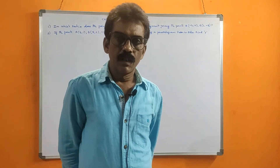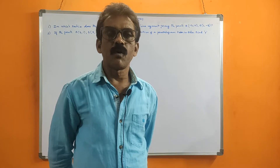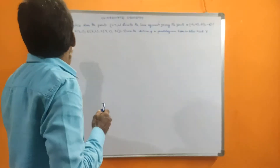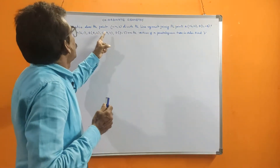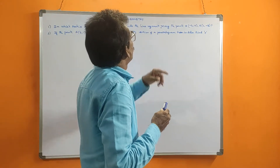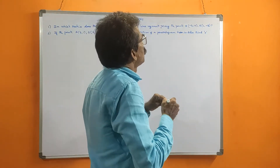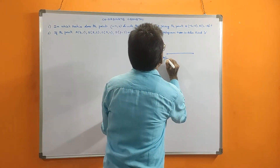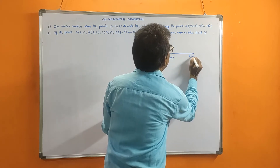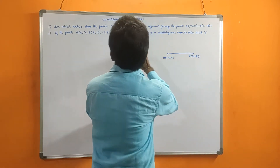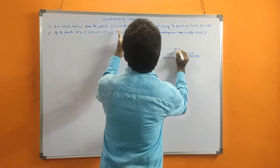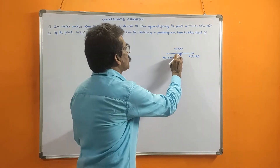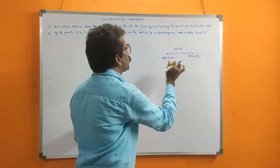Hello everyone, welcome to my channel. In this video I want to explain some more numerical problems on coordinate geometry. The first problem is: in which ratio does the point (-4, 6) divide the line joining the points A(-6, 10) and B(3, -8)? Here, point P has coordinates (-4, 6), and we need to find in which ratio it divides line AB — that means we need to find M1 to M2.